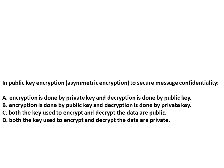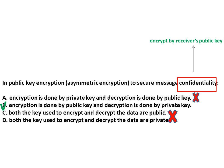Let us discuss some questions as per the CISA exam pattern. In public key encryption to secure message confidentiality, the objective is confidentiality. As we already learned, for confidentiality we need to encrypt using the receiver's public key. So the answer will be: encryption is done by the public key and decryption will be done by the private key. Option A will not be correct because encryption should be done by the public key, and options C and D are also not correct. Remember: if using a public key for encryption, use a private key for decryption; if using a private key for encryption, use a public key for decryption.